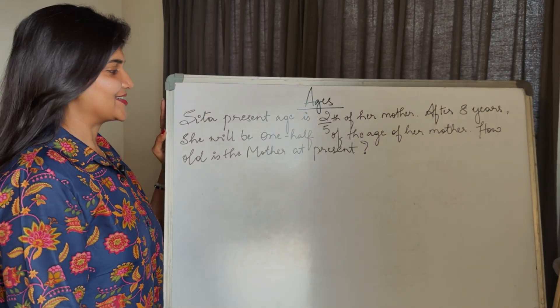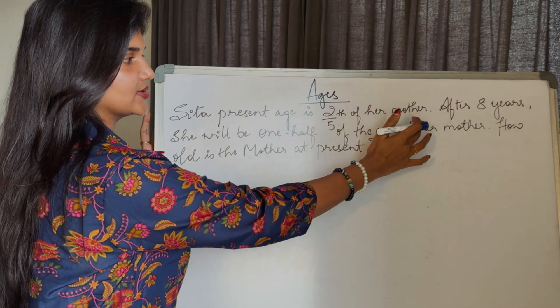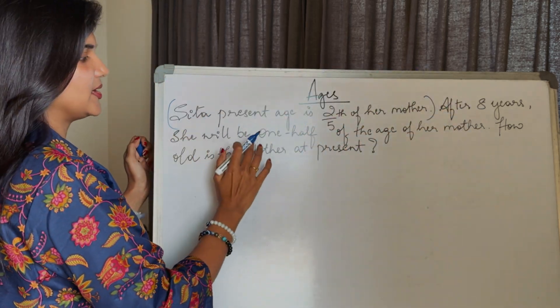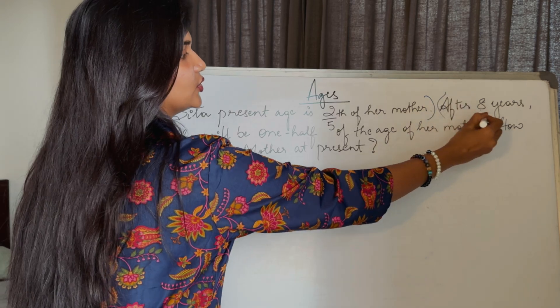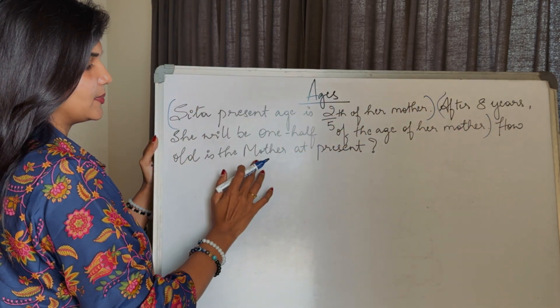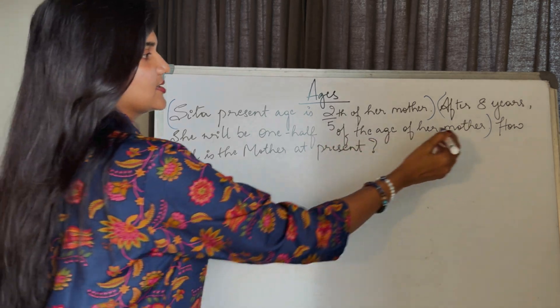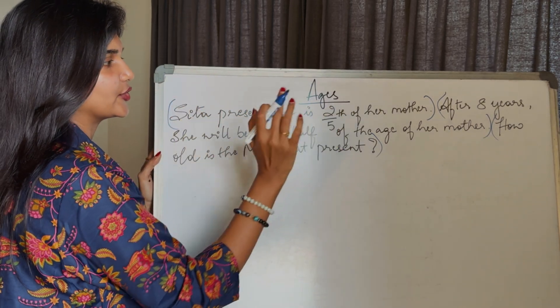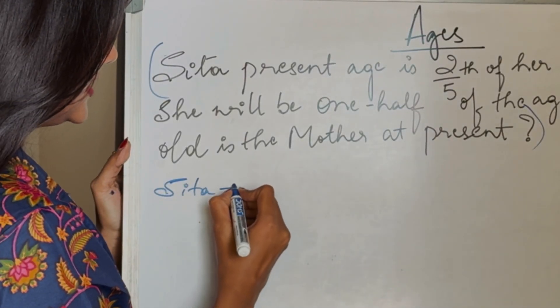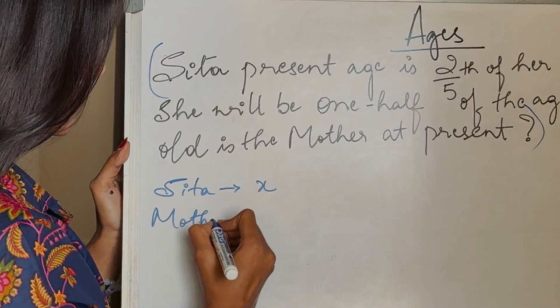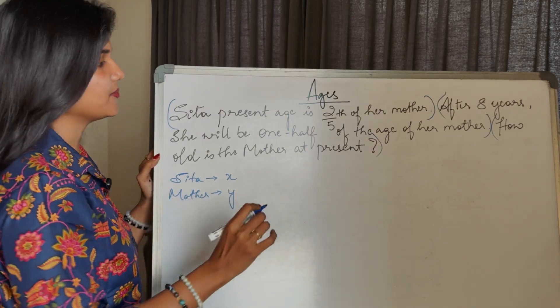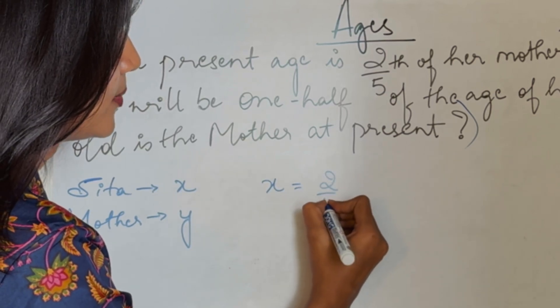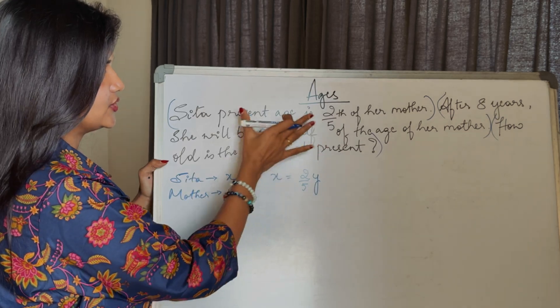Let's solve the last question for today's session. Here is our last question: Sita's present age is 2/5 of her mother. After 8 years, she will be one half of the age of her mother. How old is the mother at present? First, I'll take the first statement, then the second statement, and third is the final question.